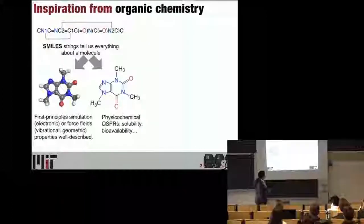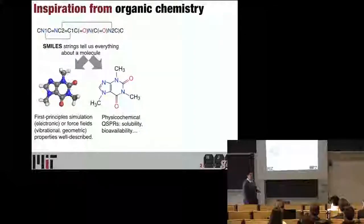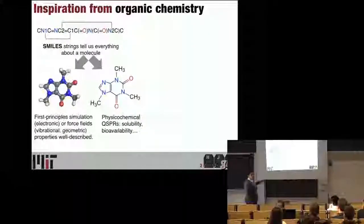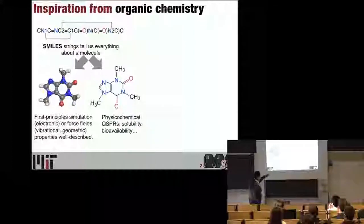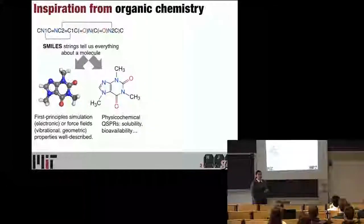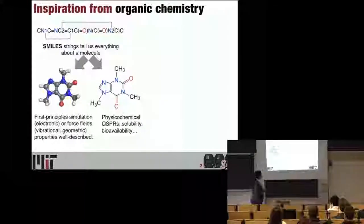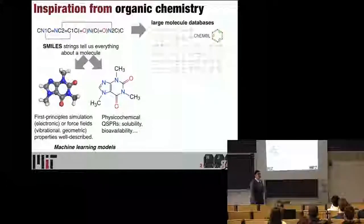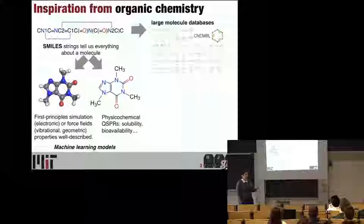I live in a reductionist world where I'd say this molecule here is caffeine, and knowing the SMILES string tells you an awful lot about the molecule. You can have a pretty accurate force field that gives you lots of properties. Even before people started talking about machine learning as a phrase, there were already physical chemical QSPRs. If I wanted to be useful, I could hand the SMILES string to someone who had built one of these and they could probably tell me if it would pass the blood-brain barrier, its solubility, its bioavailability, and so on. If we know chemical structure, we know an awful lot in organic chemistry.